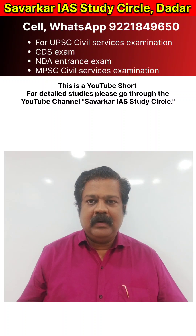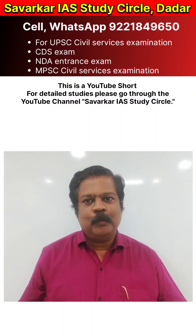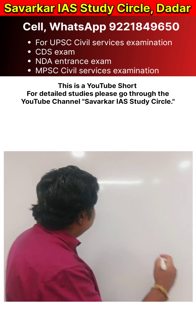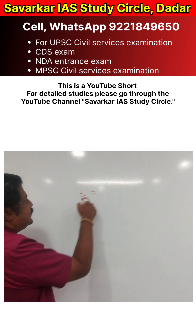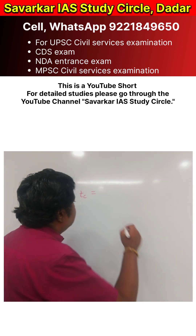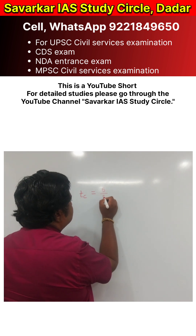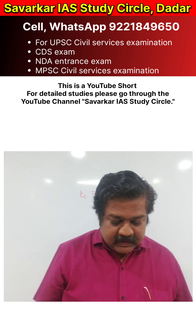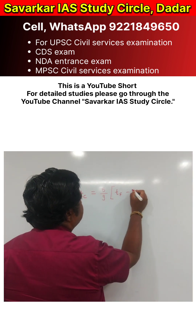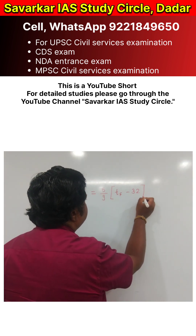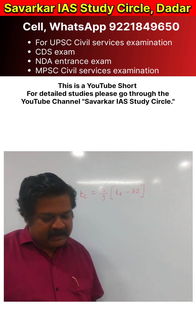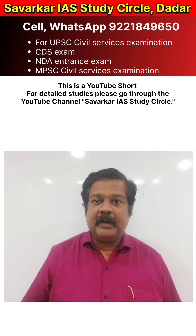How to convert degree Celsius into Fahrenheit scale. Let us go by the formula: TC, which stands for temperature in degree Celsius, is equal to 5 by 9 into square bracket TF minus 32. By using this formula, one can convert degree Celsius into Fahrenheit.